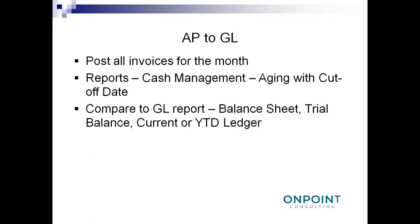The first reconciliation we're going to talk about is AP to GL. You want to make sure that everything has been posted for the month, and you want to run an aging report for the period you are trying to reconcile. Then you're going to compare that report to one of the general ledger reports. It's a pretty easy reconciliation — you're just making sure that everything is posted and comparing an aging report to a GL report.